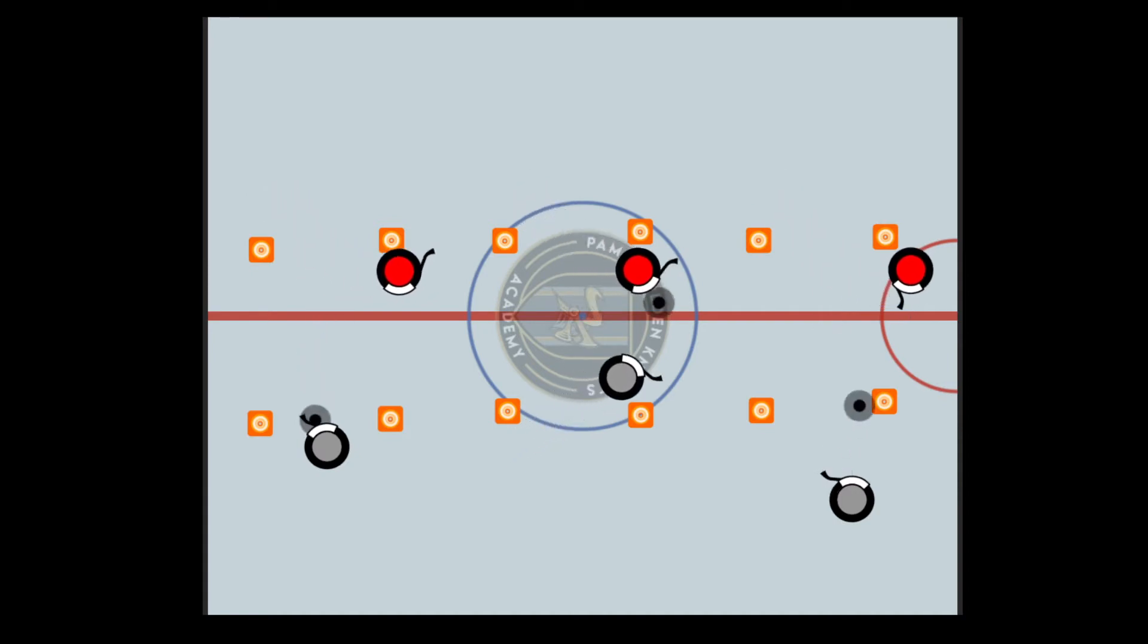Always face the puck while skating around the pylons and pass it back to your partner. There are three different variations of this drill.